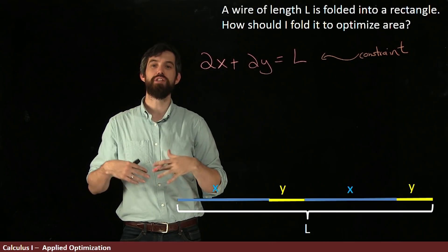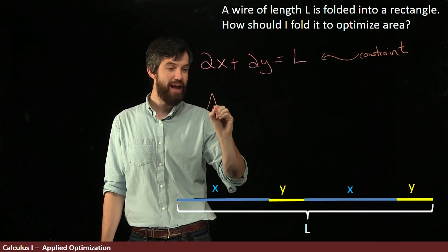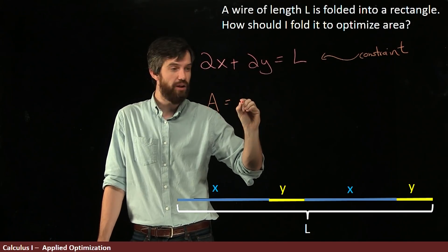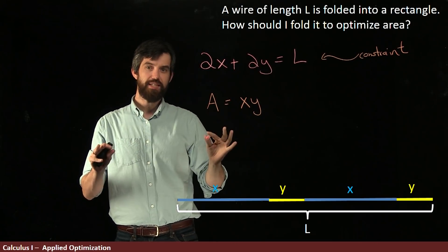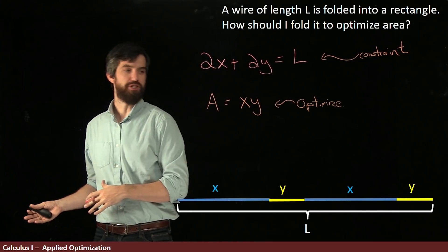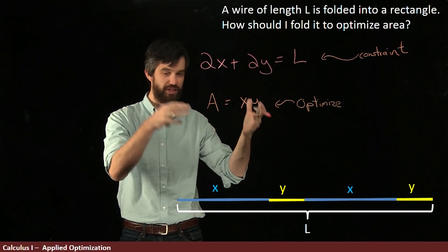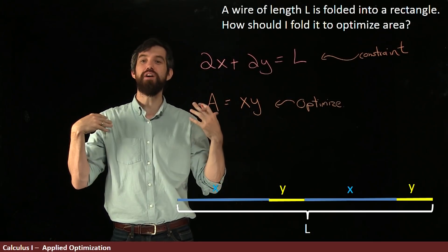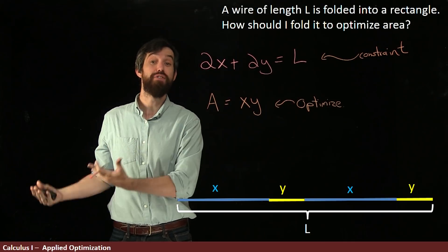My second equation is the optimizing equation. The thing I care about is the area — I want to maximize it. For a rectangle, that's just X times Y, base times height. This is my optimizing equation. The problem with just taking the derivative right away is that there are two different variables: X and Y. It's not a function of one variable where you can use the techniques of single variable calculus.